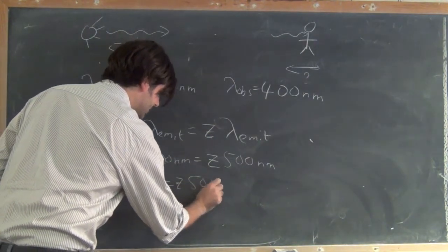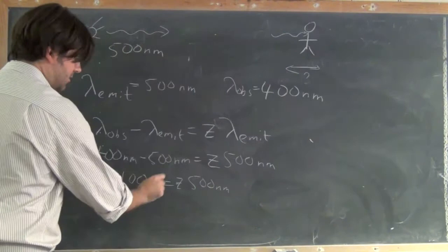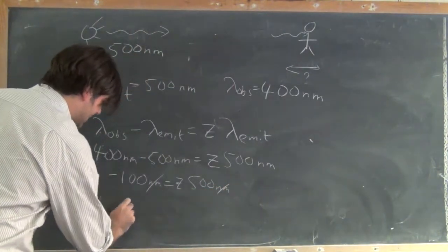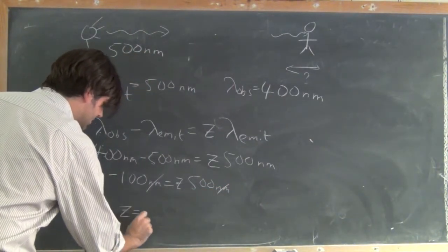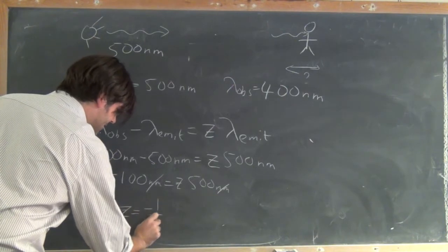So, I can cancel off the nanometers, and I get that z is equal to minus 1 fifth.